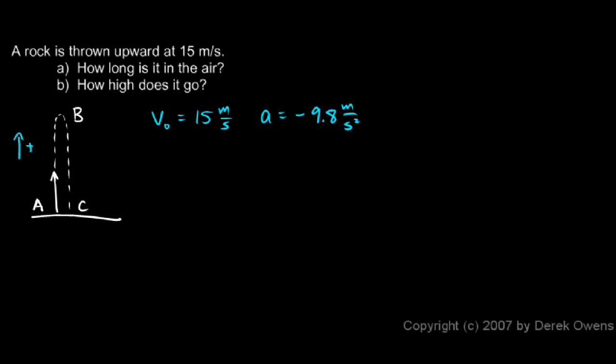Now there are a few different ways we could solve this. I'm going to show you one way right now. Think about point A. I know the velocity at point A is 15 meters per second upward. That's the speed with which it's thrown.